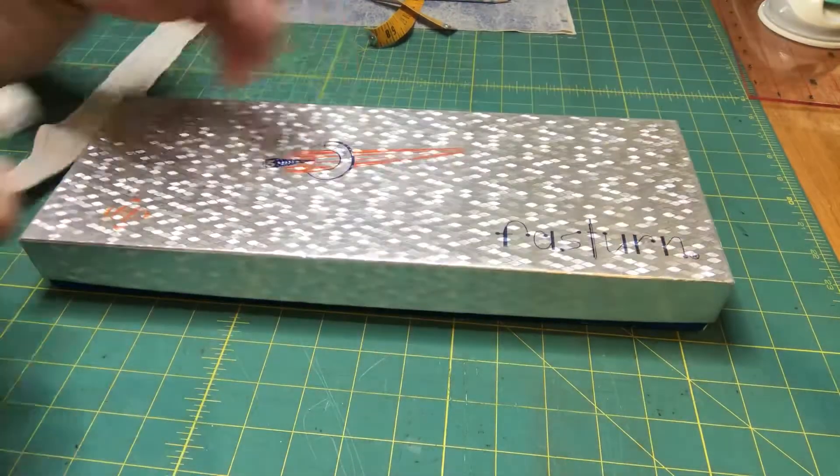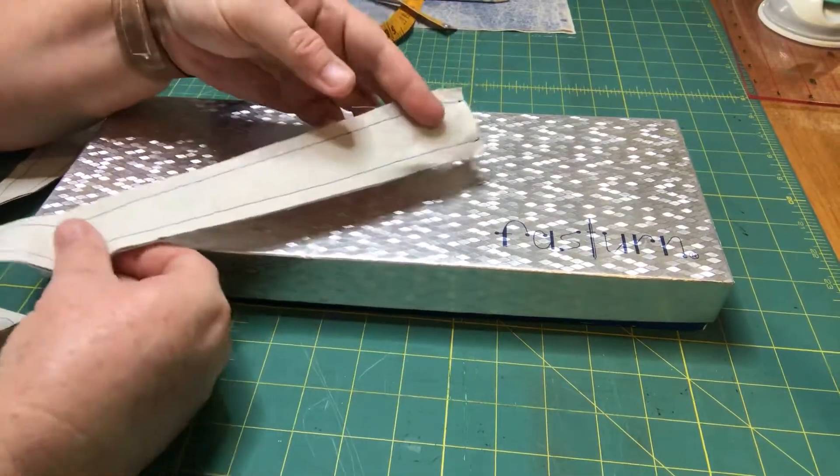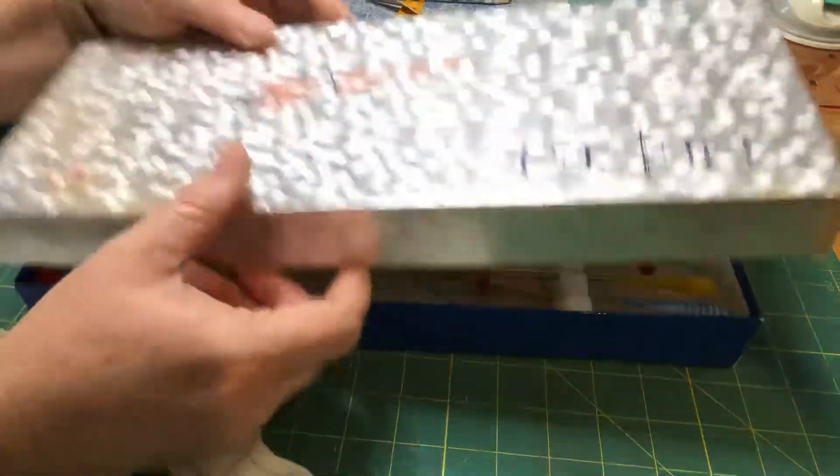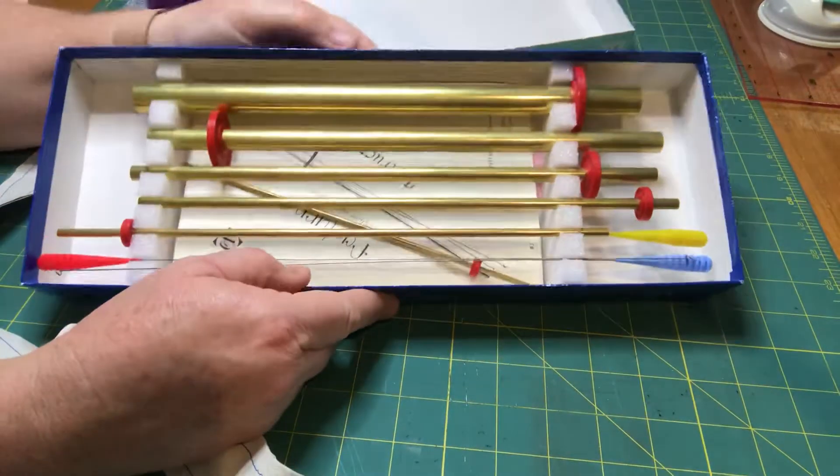So what it does is it turns out fabric tubes, it turns them inside out really easily and quickly. So let's open the box and this is the full system.